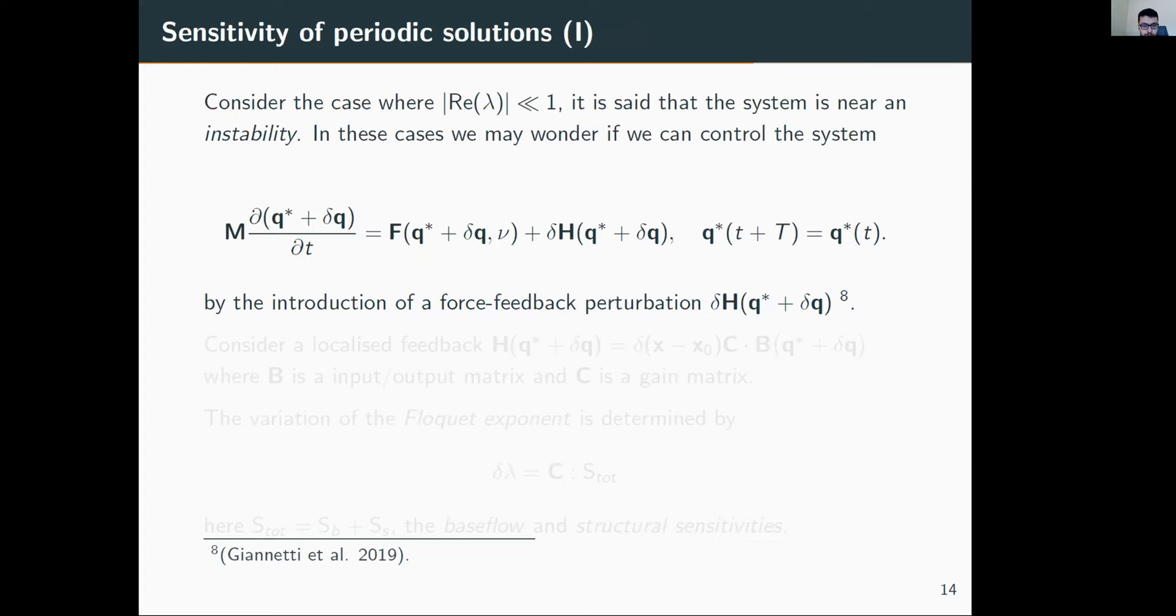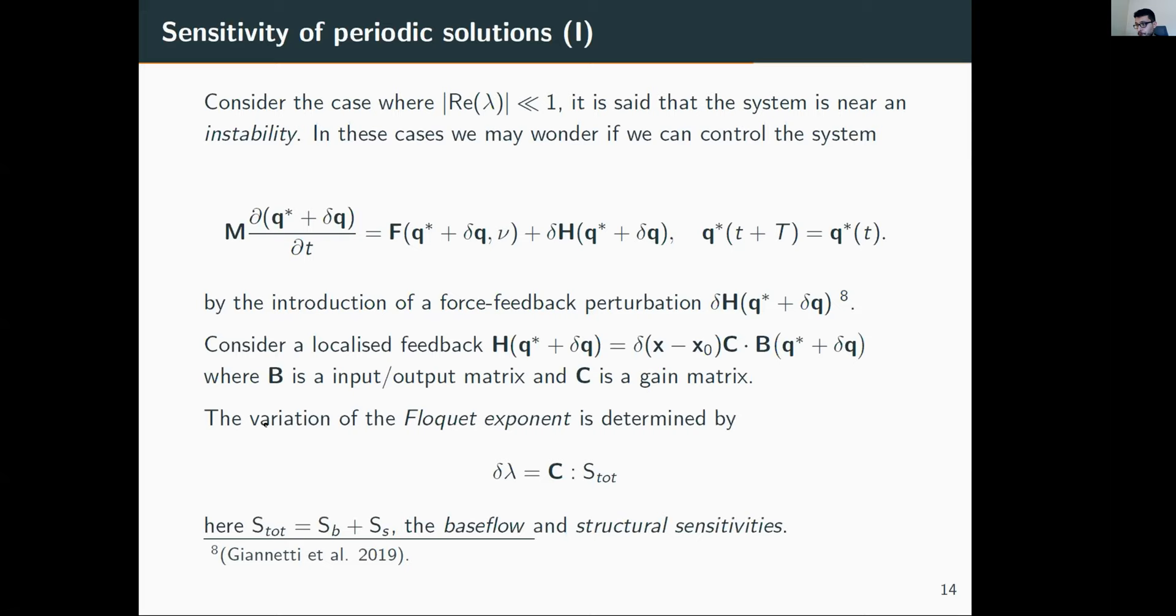Once we've evaluated the stability and computed the periodic orbit, in this last part I'll introduce you to sensitivity methods. They're used to control instabilities. We consider the easier problem where the system is weakly unstable and we want to control it by introducing a force feedback, denoted as delta H. After some computations using a Lagrangian approach, if we restrain ourselves to a localized term depending on a gain tensor—where B is an input-output matrix, ones and zeros in a region—then the variation of the Floquet exponent is uniquely determined by the contraction of the gain tensor and the total sensitivity tensor.